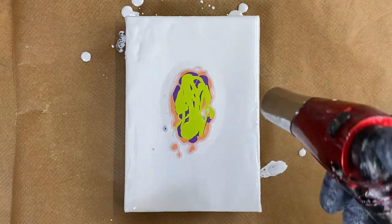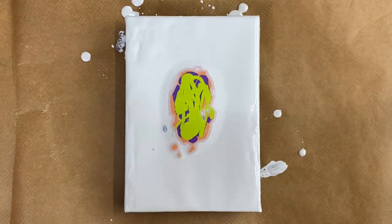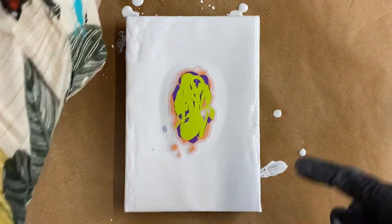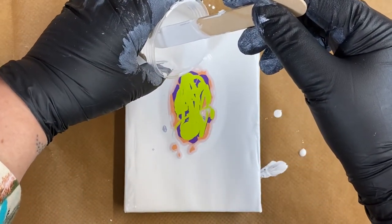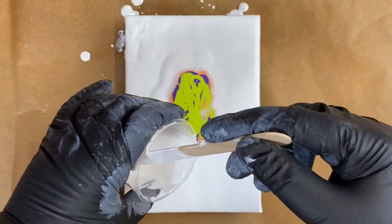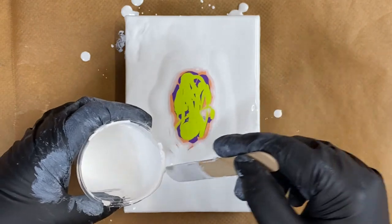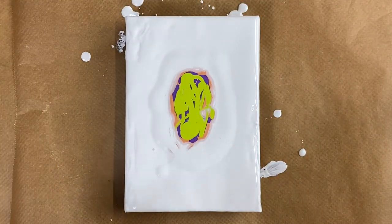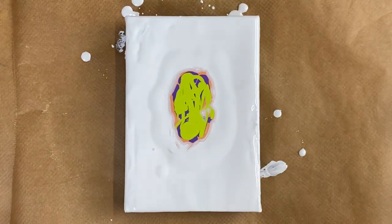I'll give it a torch, and then I'm going to put some of the white paint around the edge. Let's just give that a quick torch as well. I can see some bubbles in there, we want to get rid of as many as we can.